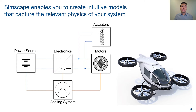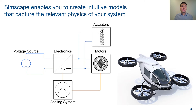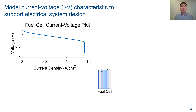For the power source, the lowest fidelity model is an ideal voltage source. There is no information about the underlying technology, and your analysis at this point is focused on other parts of the system. Now let's add the first level of detail. You can start by replacing the voltage source with a basic fuel cell block that models the voltage-current characteristic of a fuel cell, like the one shown in this plot.